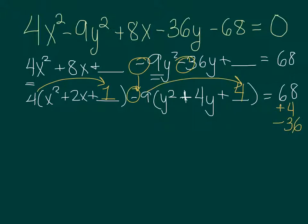And now I'll rewrite it in the factored form. So I have 4 and then parentheses x plus 1 squared minus 9y plus 2 squared. Remember, we changed this to a plus. And that's all going to equal 36.